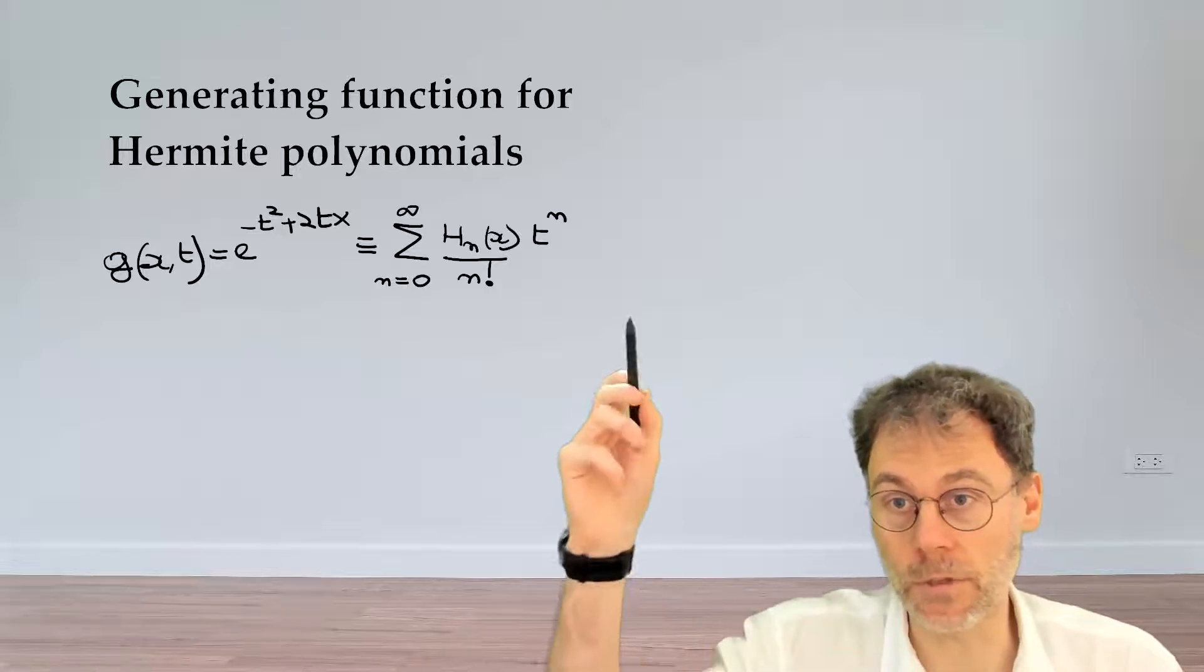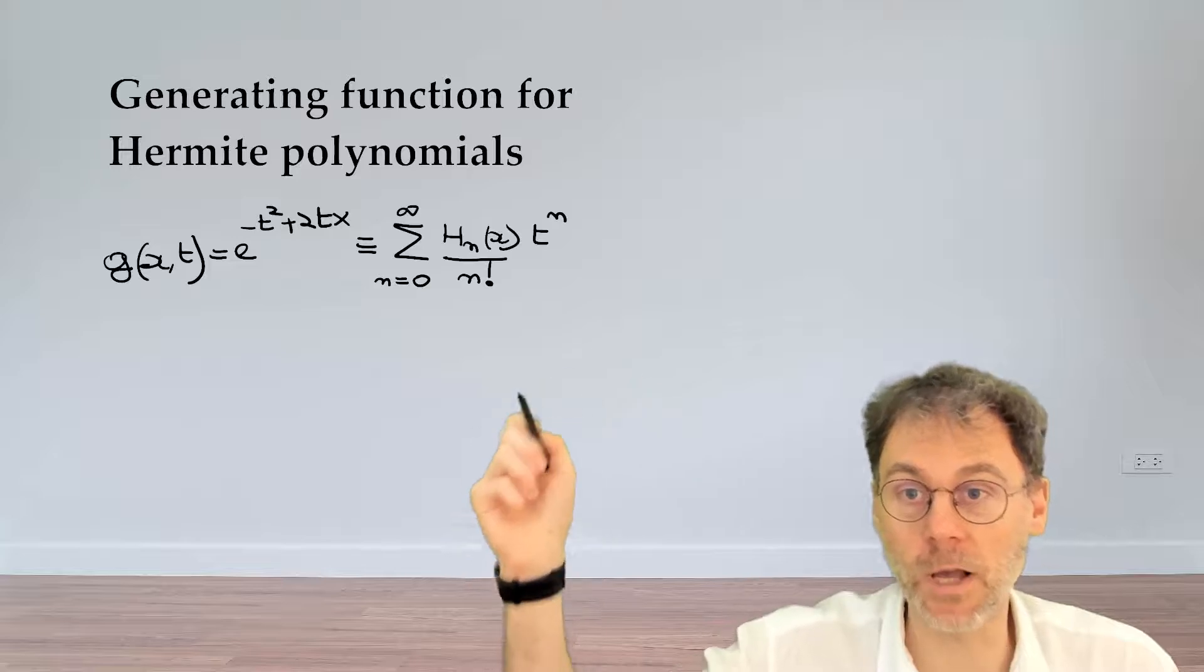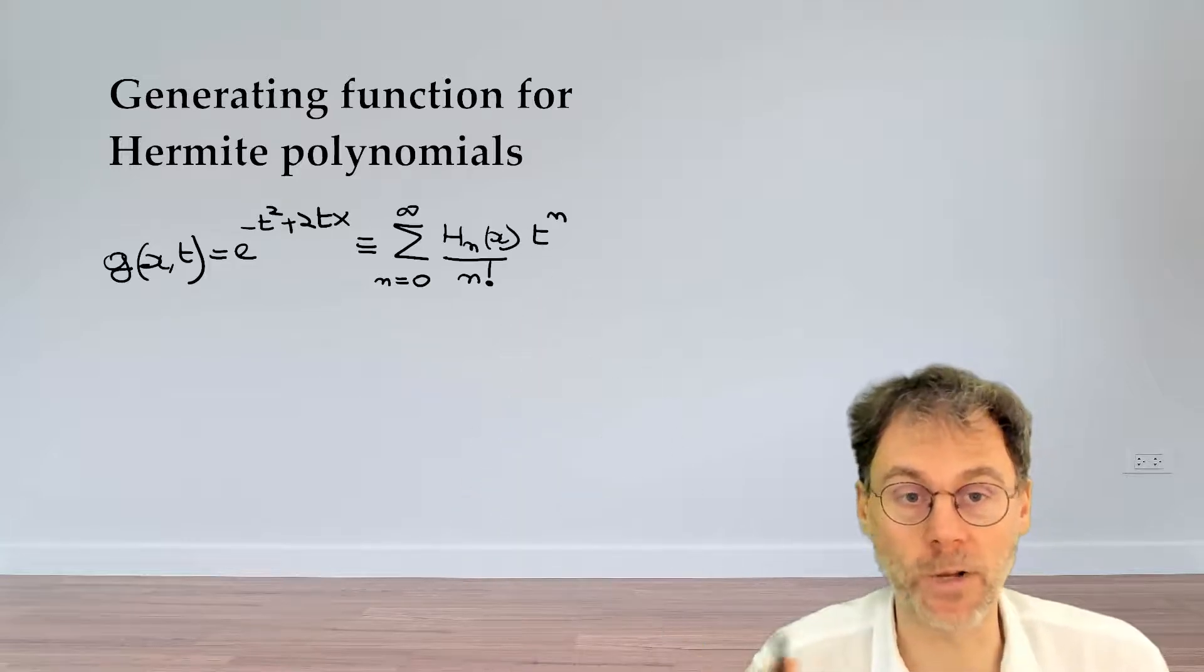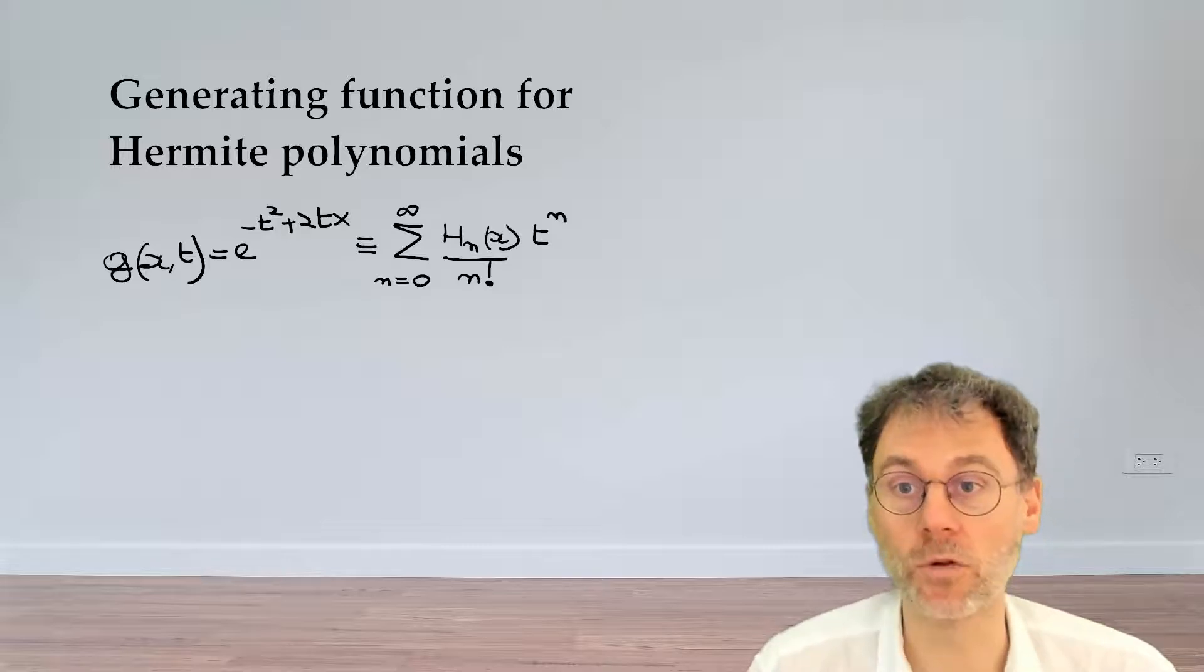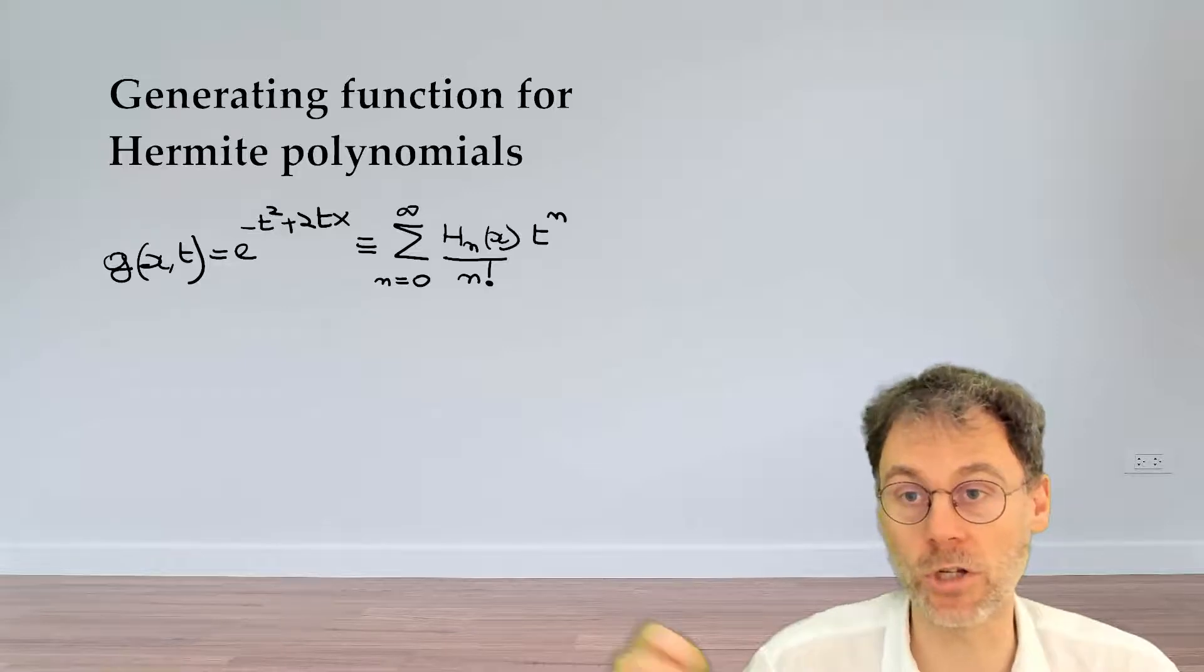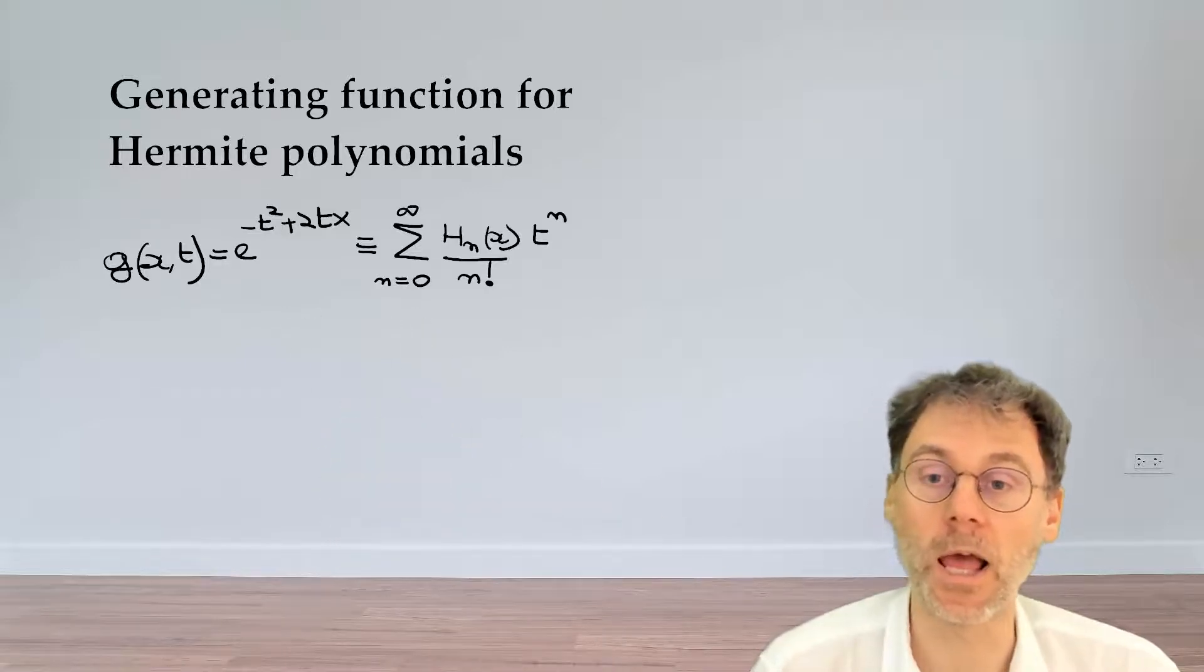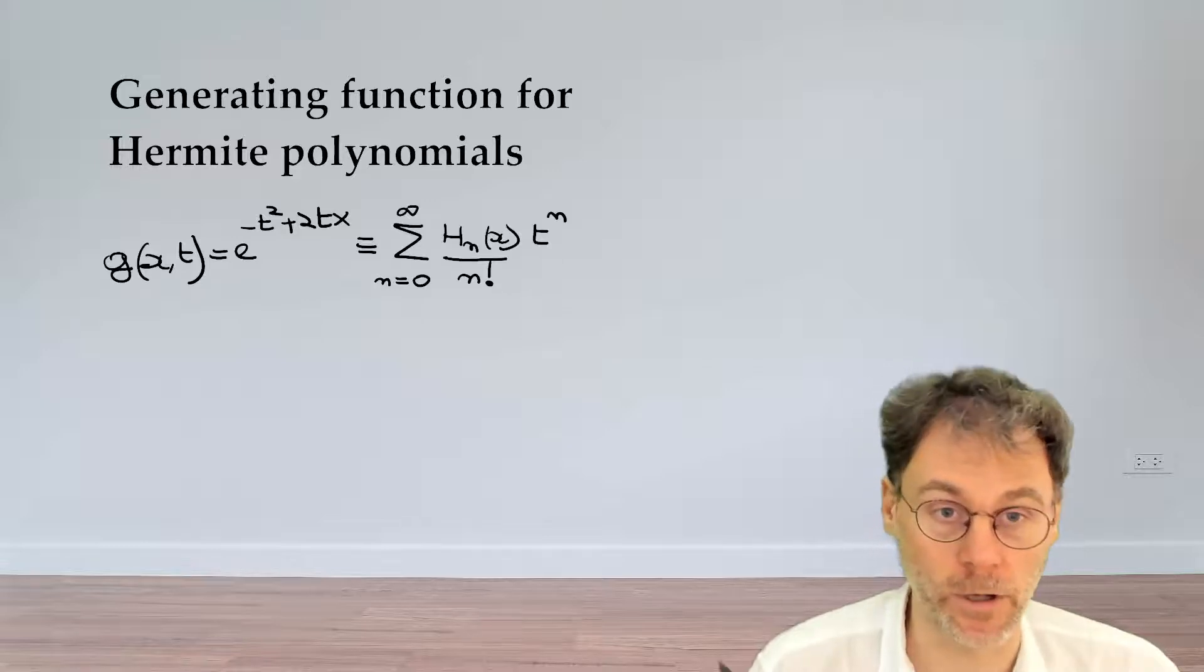And again, just like before, this is a purely mathematical trick. Don't try to think that there's anything physical behind that, t represents time or something like that. This is a purely mathematical trick. It's a different way to define the Hermite polynomials. But later on, we'll be seeing that both the definition in terms of generating function and the definition in terms of the differential equation, they are equivalent.